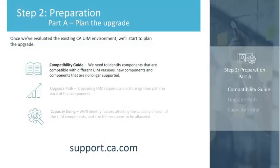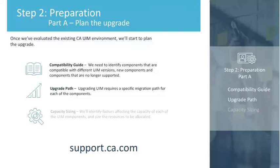Once we've evaluated the existing environment, we'll start to plan the upgrade. We first want to refer to the compatibility guide. The guide provides a compatibility matrix to help identify the components that are compatible with different versions of UIM. We also want to reference the component support section of the guide to identify new components that are supported and components that are no longer supported. The upgrade path section is another area to pay close attention to — it highlights the specific migration paths that are supported for each UIM component. Some versions require upgrading to a previous version before upgrading to the most current version, so we'll pay close attention to these upgrade paths.